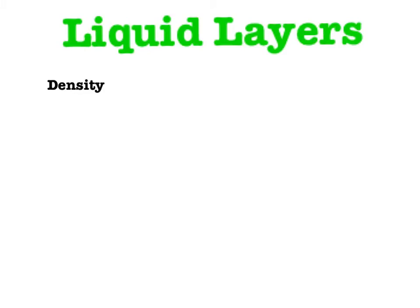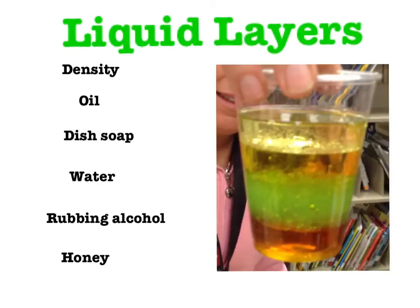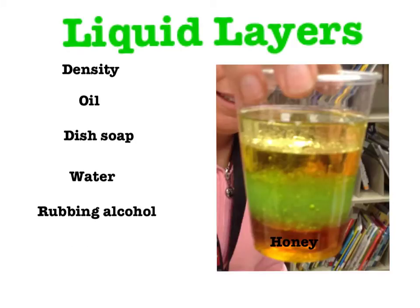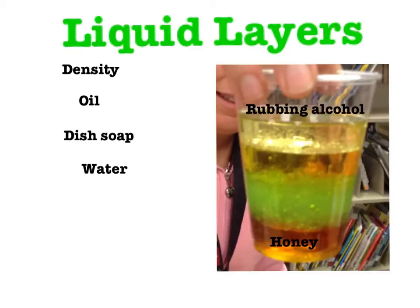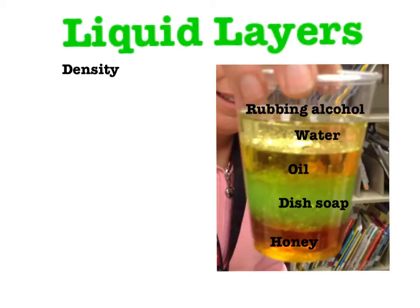Liquid layers. Density is the measure of how tightly the molecules are packed together in a solid, liquid, or gas. The more tightly packed the molecules are, the heavier the object is. We layered liquids to talk about their density. Honey is the most dense and rubbing alcohol is the least dense.